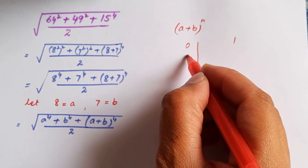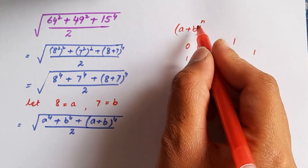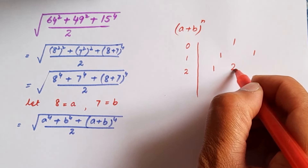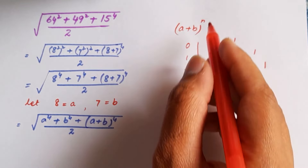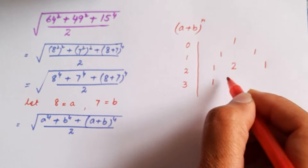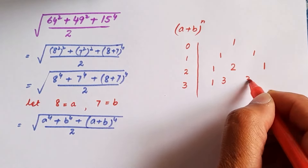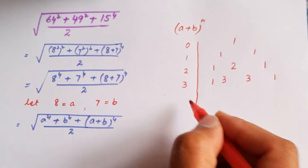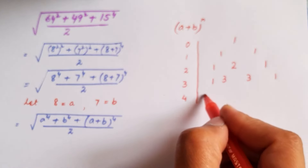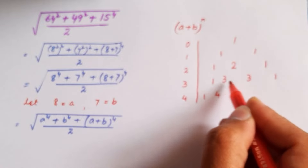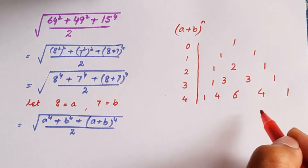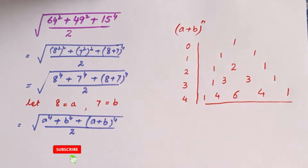When the index is 0, the coefficient is 1. When the index is 1, the coefficients are 1, 1. When the index is 2, the coefficients are 1, 2, 1. When the index is 3, the coefficients are 1, 3, 3, 1. When the index is 4, as in our case, the coefficients are 1, 4, 6, 4, 1. One key thing to note: the first and last coefficients are always 1.